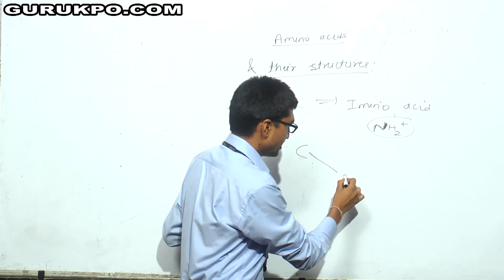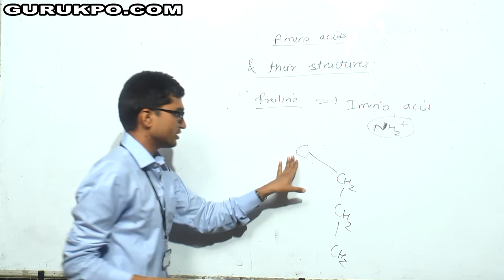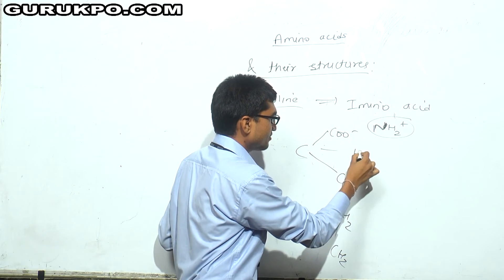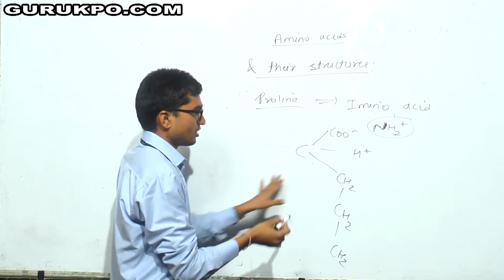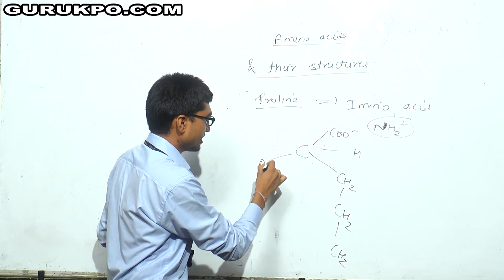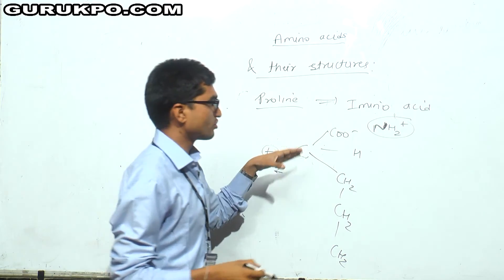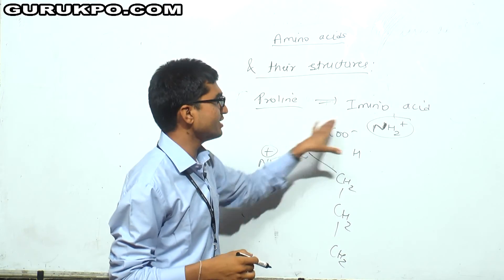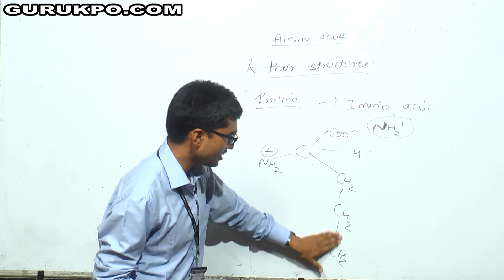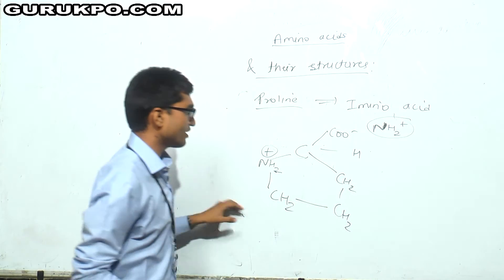In place of R, proline has CH2, CH2, and CH2. In the structure of amino acid, we have COO⁻, H, and NH3. The NH2 group present in proline is what makes it an imino acid. To form the cyclic structure, I will remove and join the chain here — and what I get is proline.